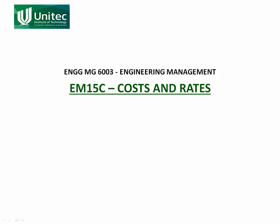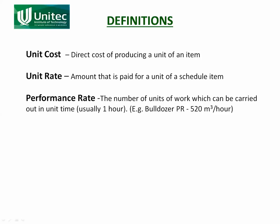In this slidecast we're going to look at costs and rates related to contracting. A cost is the cost of producing an item. A unit cost is the cost of producing one unit of an item — so a cost is what it costs you to dig a hole, for example, including the wages of the workers. A unit cost would be the cost of digging one cubic meter.